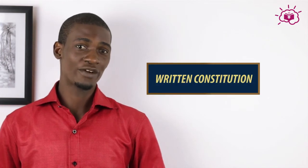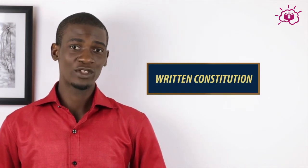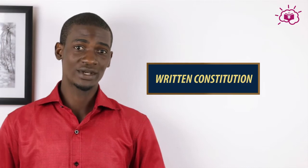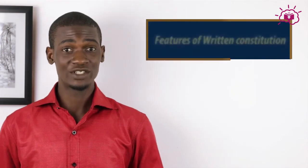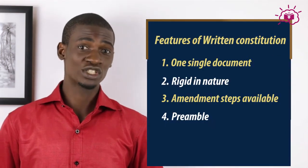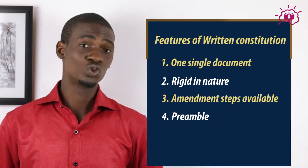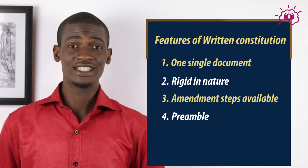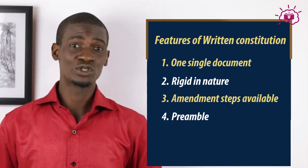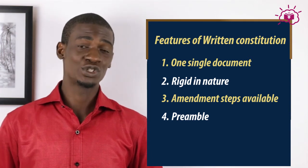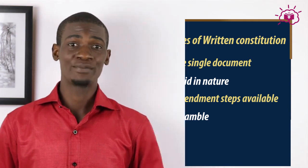The written constitution is one where this body or set of rules and regulations are codified or put in one single document. The features of a written constitution are: one, it is written in one single document; two, it is rigid in nature; three, the steps that can be taken to amend the constitution are written in that constitution; and four, it has a preamble.